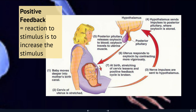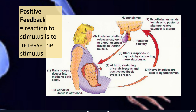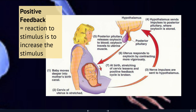This cycle continues, which is why contractions start ten minutes apart, then five, four, and three — that's the positive feedback loop in action. The only end to this process is when the baby is actually born, breaking the cycle. Someone who is ready to give birth but hasn't started labor can be given an oxytocin drip — an IV with oxytocin — which significantly speeds up the birth process, though it can be tough on the mom as labor progresses very quickly.